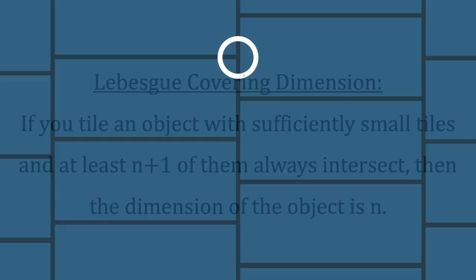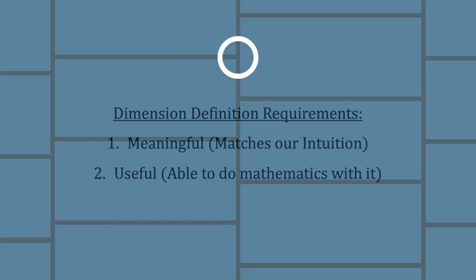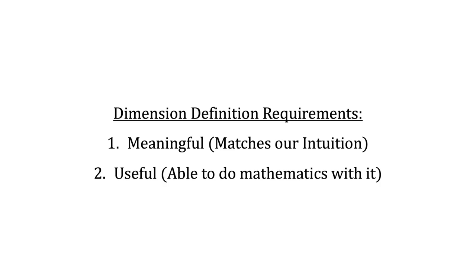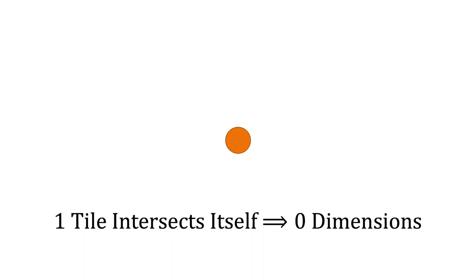In other words, if I use small enough tiles on a plane and three of them always intersect, then the plane has dimension two. What we should consider now is whether the Lebesgue covering dimension satisfies both of our requirements from earlier. Let's start with whether this definition is meaningful or matches our intuition. The point can be tiled with just one set, and this tile trivially intersects itself, so there's one set that has an intersection. Therefore, the point has zero dimensions.